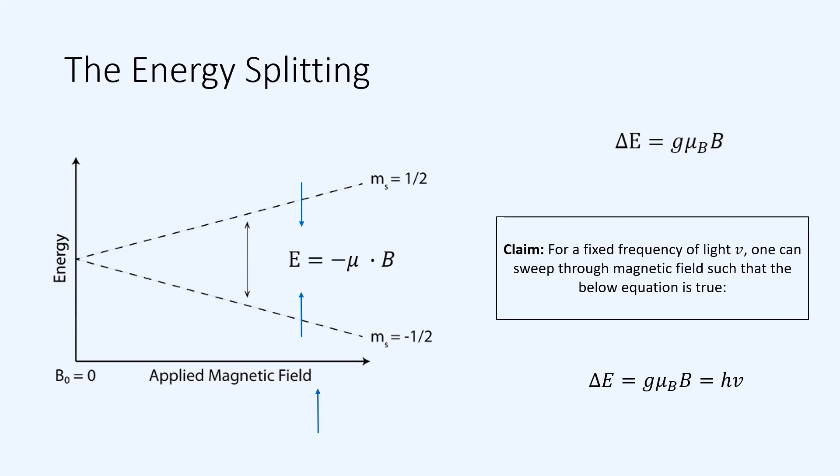At zero magnetic field, the energy of the electron which is spin up and the electron which is spin down, with respect to the external magnetic field, are both the same. There's no external magnetic field, so there is no Zeeman effect.